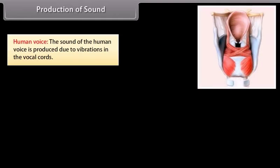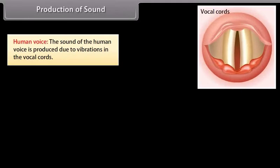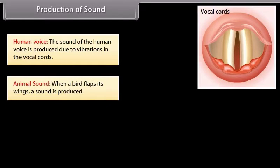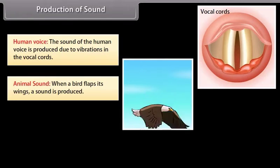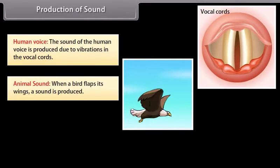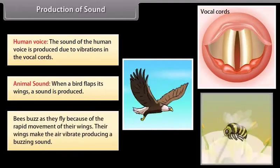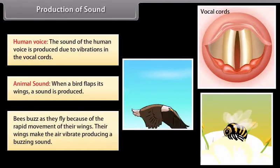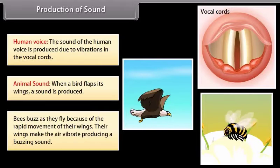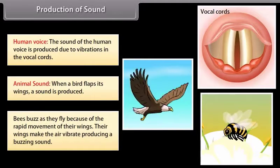Human voice: The sound of the human voice is produced due to vibrations in the vocal cords. Animal sound: When a bird flaps its wings a sound is produced. Bees buzz as they fly because of the rapid movement of their wings. Their wings make the air vibrate, producing a buzzing sound.